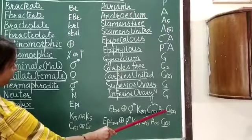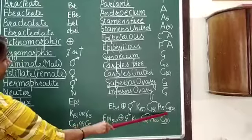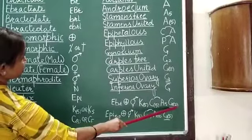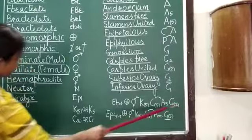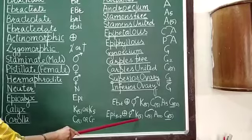In gynoecium, the bar is put below G, so ovary is superior. Number of carpels is 2, which are fused together as the 2 is enclosed within brackets. Similarly, this is the floral formula of family Malvaceae.